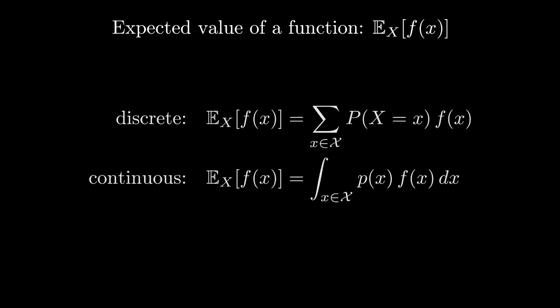For discrete random variables, you take a sum over all possible values of f of x weighted by p of x. In the continuous case, you do an integration instead.